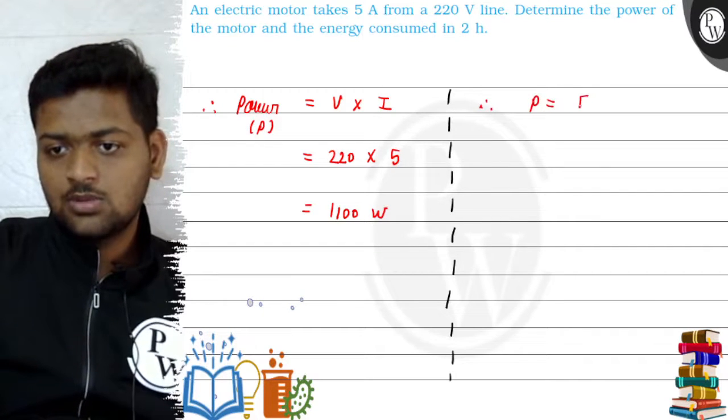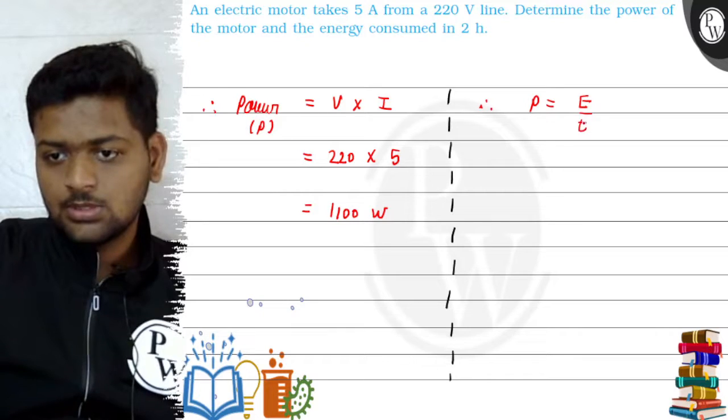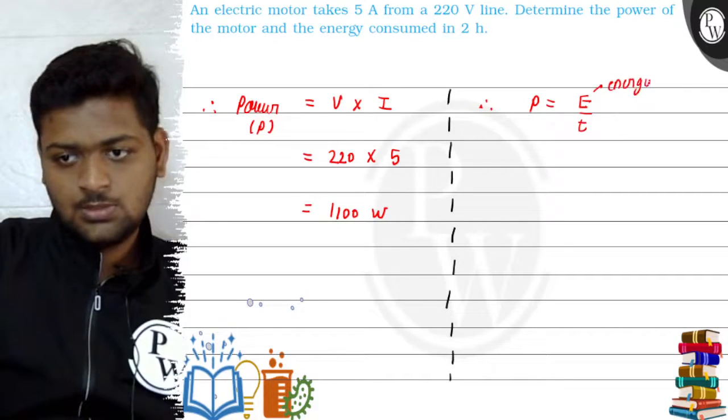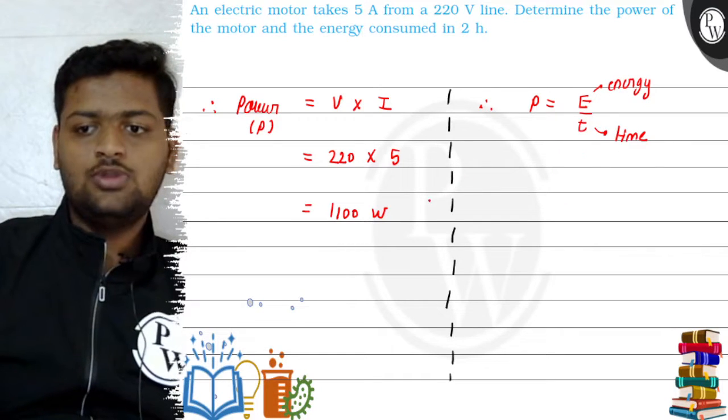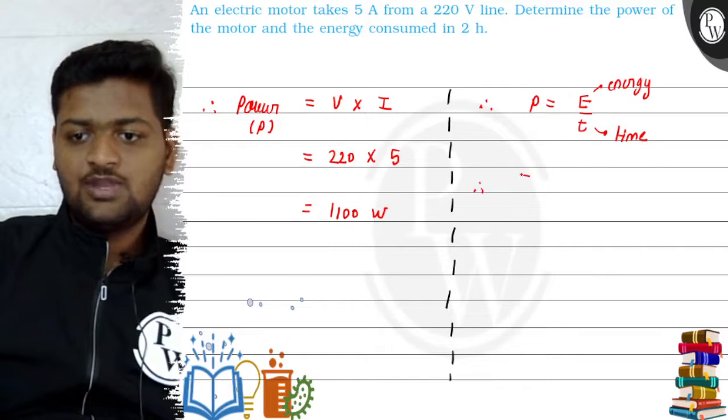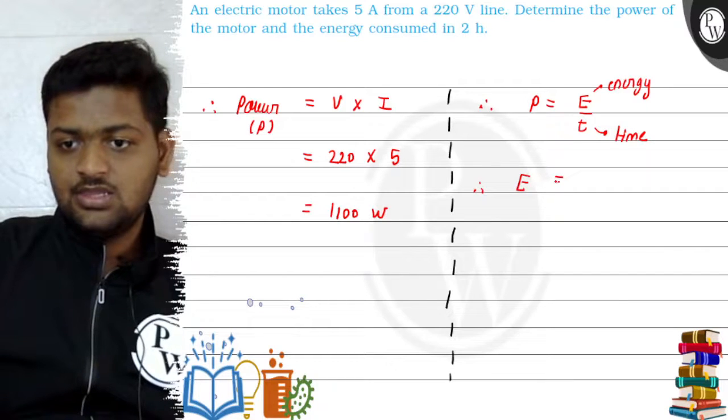Power equals energy upon time, where E is energy and T is time. So I'll modify this formula to find out energy: E = P × T.